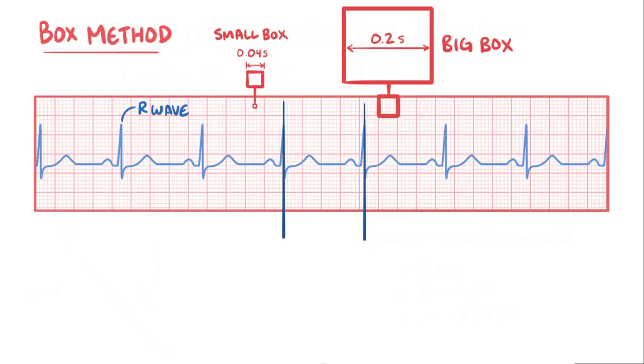You can find an R wave that has a peak that falls at the beginning of a box, and then count up how many boxes until the same point on the next R wave. So let's say that there are 4 big boxes and 1.5 small boxes between two R waves. Since you have 4 big boxes, that means 4 times 5 small boxes plus that extra 1.5 small box totals to 21.5 small boxes.